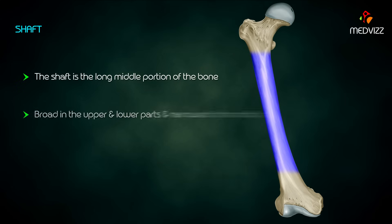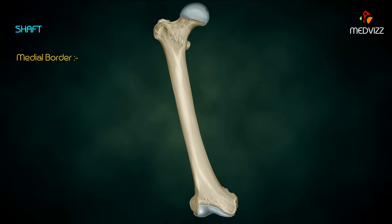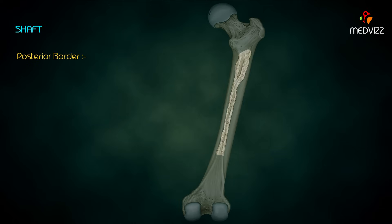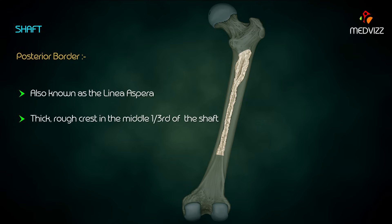The shaft is the long middle portion of the bone. It is broad in the upper and lower parts and narrowed in the middle. It has three borders and four surfaces. The lateral border separates the anterior from the lateral surface. The medial border separates the anterior from the medial surface.